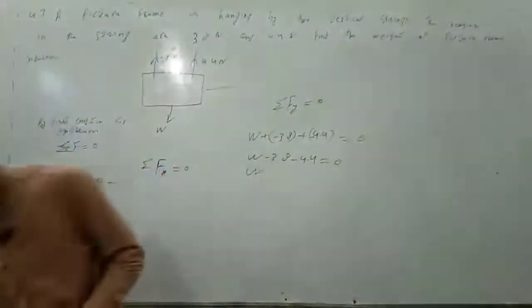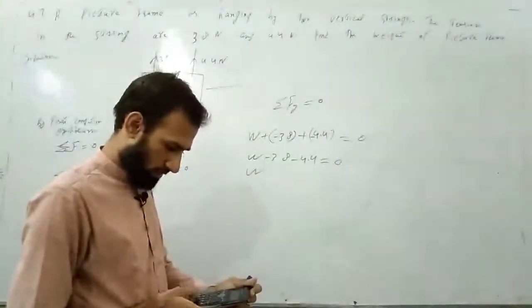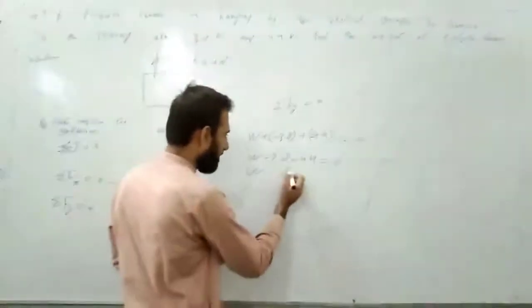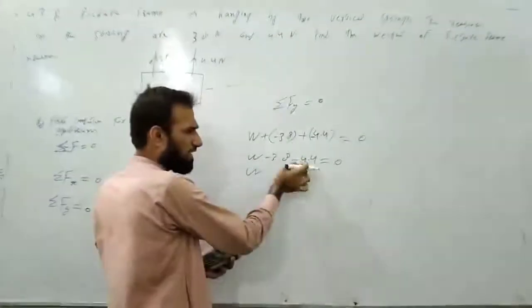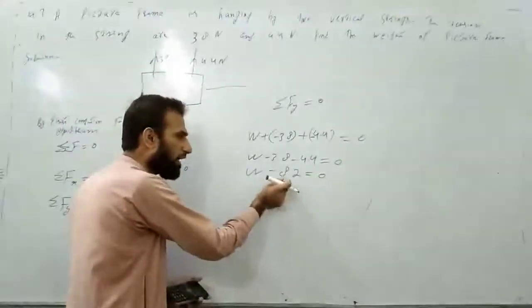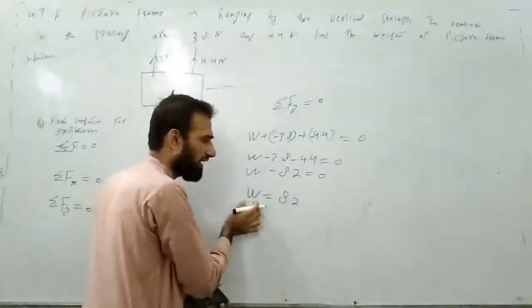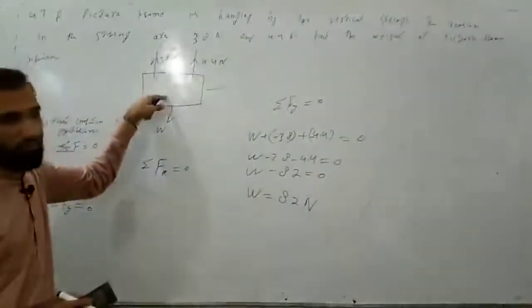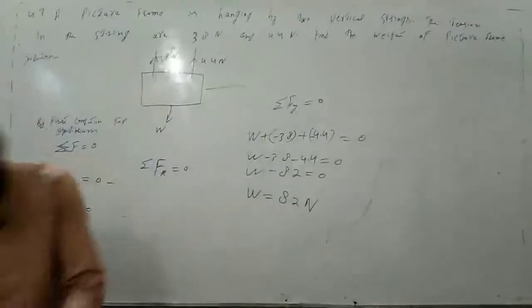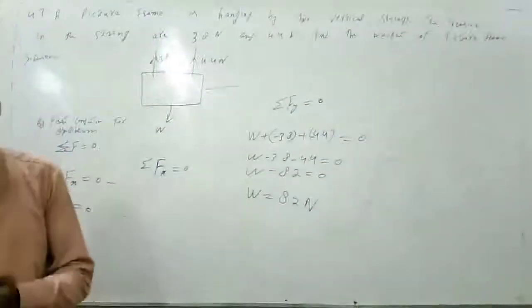3.8 plus 4.4 gives 8.2. So W minus 8.2 equals zero, meaning 8.2 goes to the other side and becomes positive. W is equal to 8.2 Newton. Weight is a force, so its unit is Newton. The weight of this frame is 8.2 Newton. Comparing with the book — 8.2 Newton — absolutely right. Our answer is completely correct.